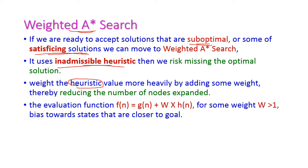The heuristic value is made more heavy by adding some weight. Hence it reduces the number of nodes to expand and always goes towards the goal. The evaluation function of weighted A* search is f(n) = g(n) + w·h(n), where w is the weight. The weight value should be greater than 1, hence it always leads towards the goal state.